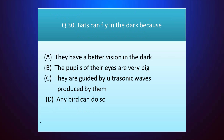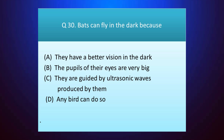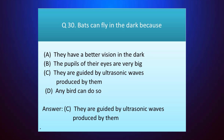Question number thirty: bats can fly in the dark because — your time starts. The answer is option C — they are guided by ultrasonic waves produced by them. Thank you.